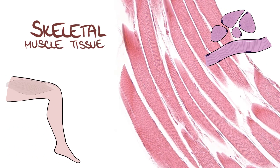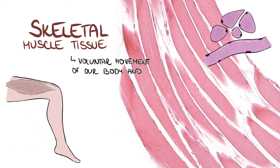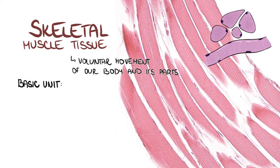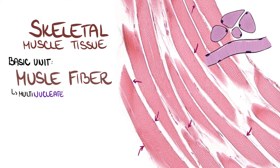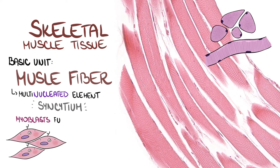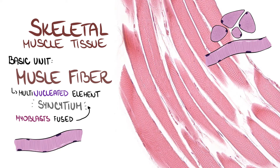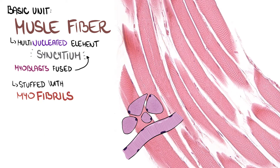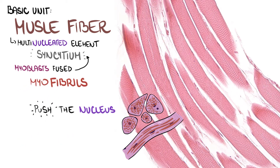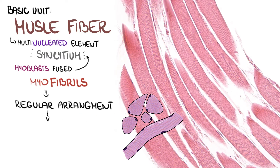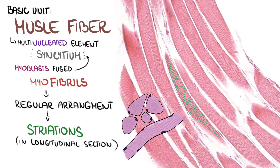Skeletal muscle is responsible for voluntary movement of our body and its parts. The basic unit of skeletal muscle tissue is a muscle fiber. A muscle fiber is a multinucleated element, or a syncytium. During development, cells called myoblasts fuse together to create a muscle fiber. The muscle fiber is stuffed with myofibrils, which are very regularly arranged bundles of cytoskeletal filaments — so-called myofilaments. Myofibrils push the nucleus to the periphery of the fiber. Their regular arrangement creates striations that can be seen in longitudinal sections in light microscopy.